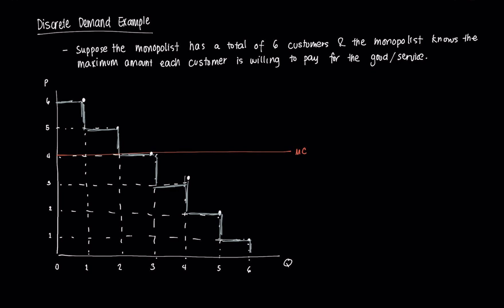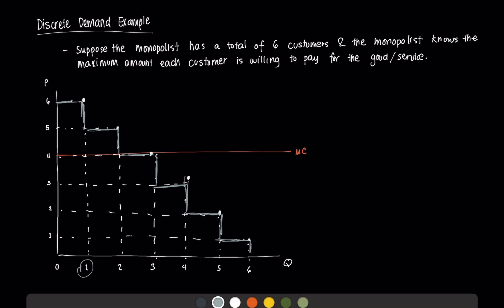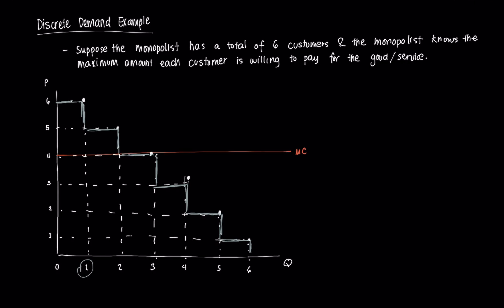Since we are under perfect price discrimination, the monopolist will charge the consumer with the highest reservation price a price equal to that person's reservation price. For the first consumer, whose reservation price is equal to six dollars, the monopolist will charge six dollars. Then for the second consumer, the monopolist will charge five dollars, since that person is willing to pay five dollars for that unit.